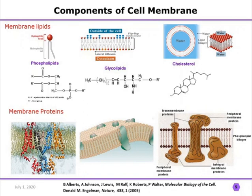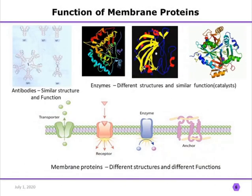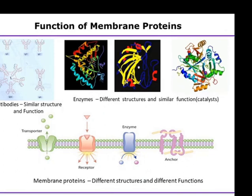You can see the integral and peripheral membrane proteins clearly in this diagram. Now I will discuss the functions of membrane proteins. Antibodies, for example, share a similar structure and function — they are all Y-shaped and perform a defender mechanism. Enzymes have different structures but all perform catalytic functions. Similarly, membrane proteins have different structures as well as different functions.